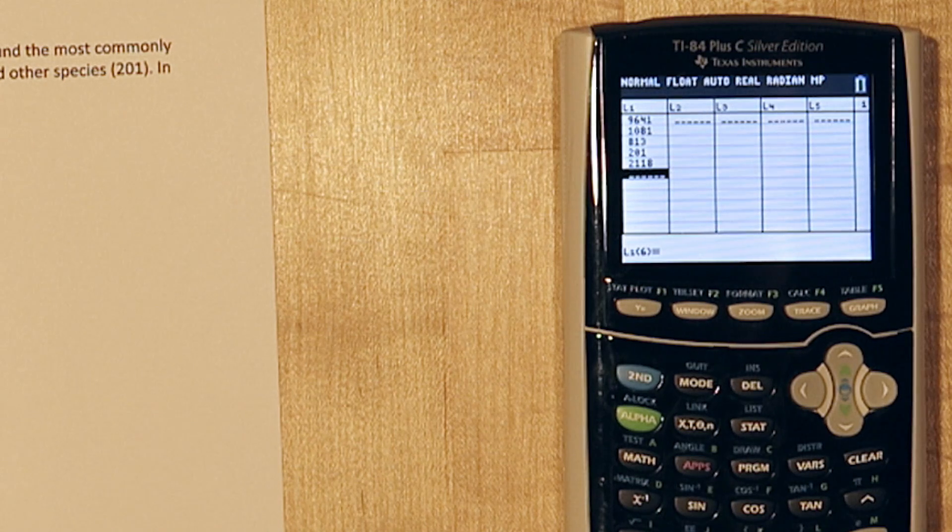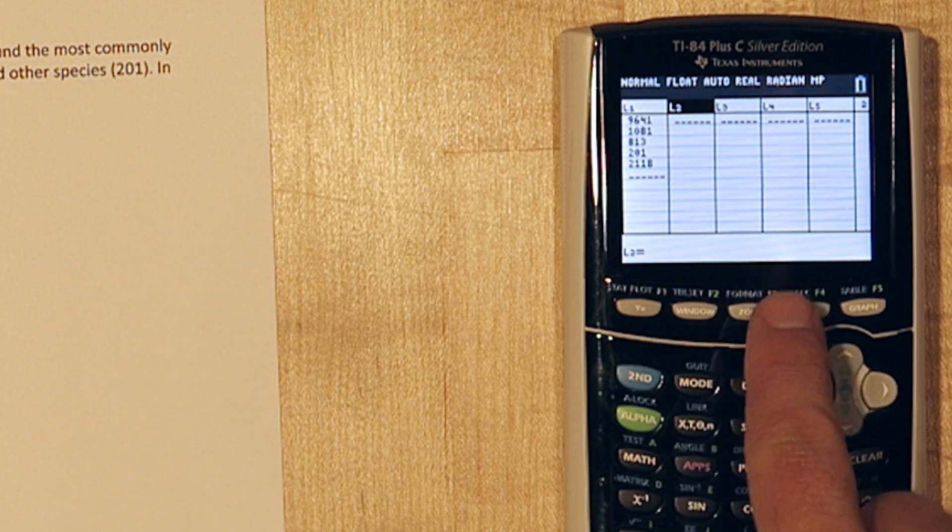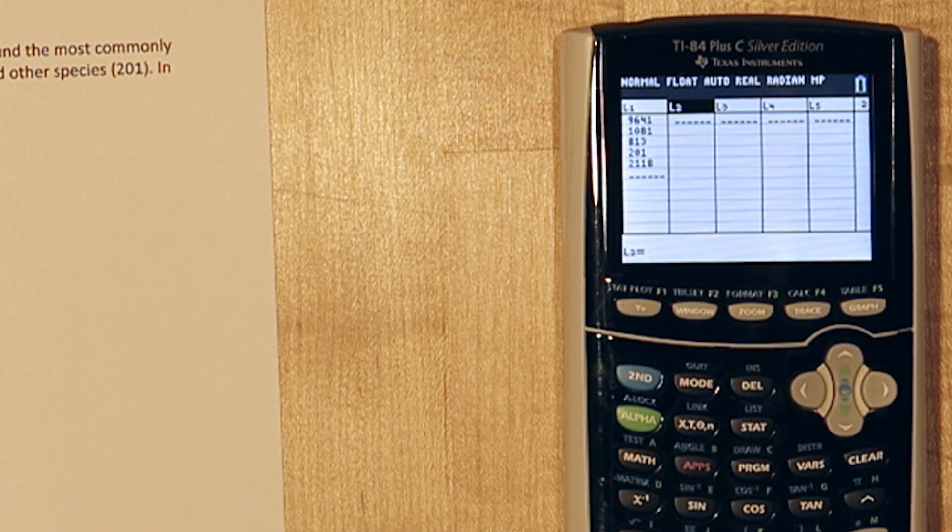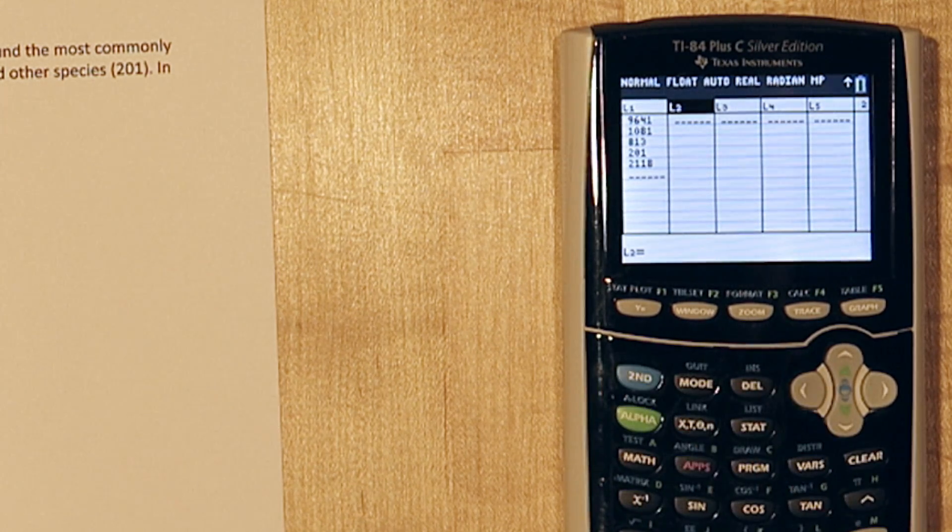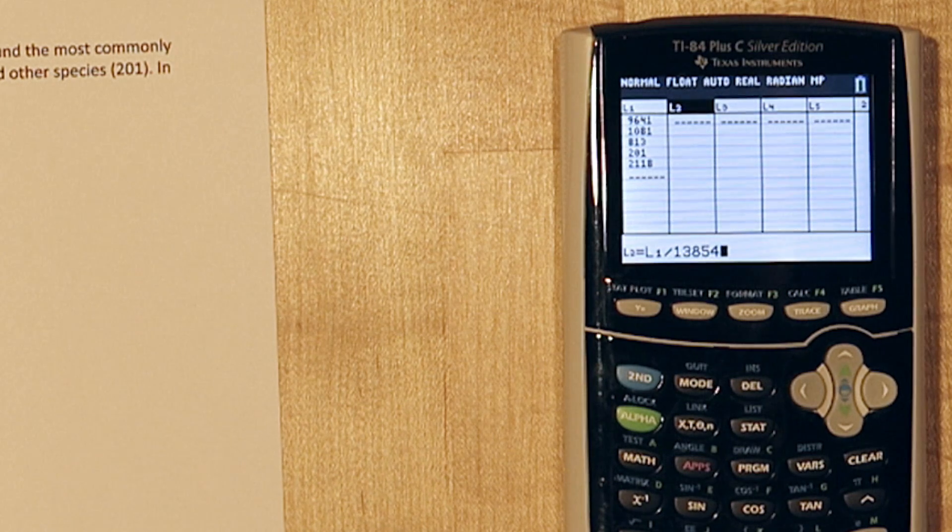Now here's where the trick comes in. If you press over, you get to list 2. Then press up. This line down here allows us to type a function for list 2. So what we're going to do is take list 1, so I'm going to press 2nd and then the number 1, and divide all the numbers in list 1 by 13,854. Now when I press ENTER, here's all the relative frequencies.